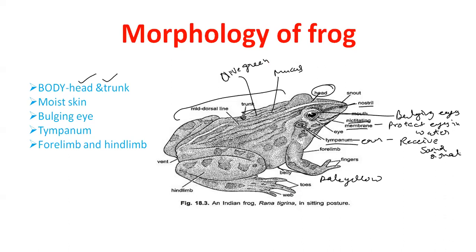They have forelimb and hindlimb. Hindlimb is much bigger, muscular, and stronger than the forelimb. Forelimb have four digits. Hindlimb have five digits. Hindlimb have webbed feet. This webbed feet help them in swimming.